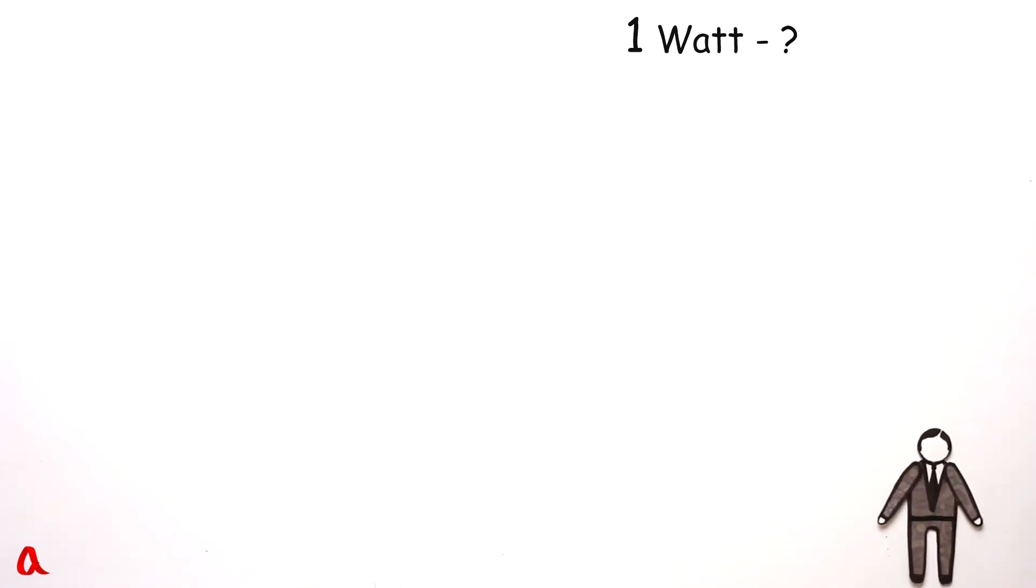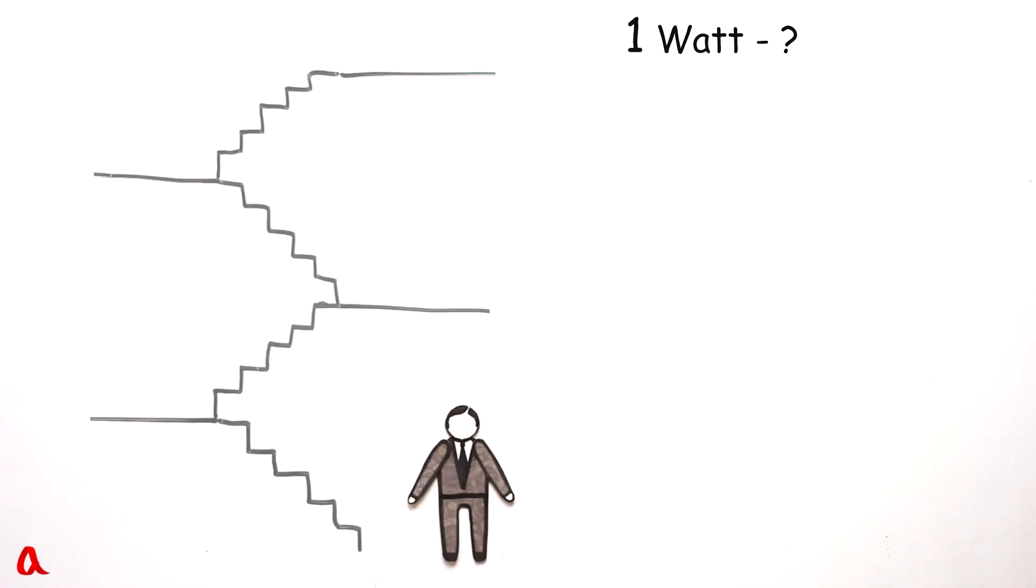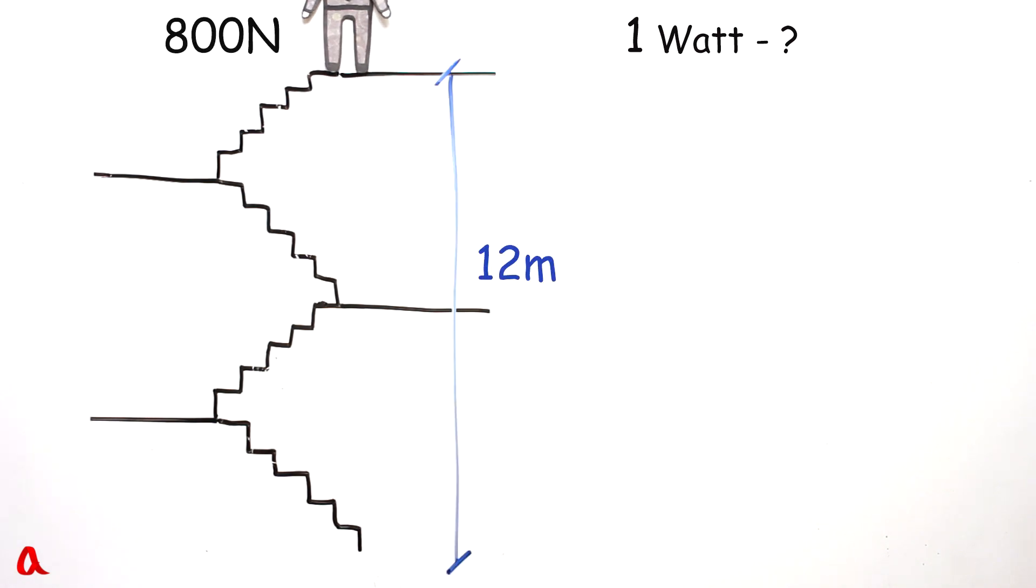To answer this question, let us find the power developed by a person ascending a staircase. A man whose weight is 80 kilos is climbing the stairs to the fourth floor. His weight equals 800 newtons and the height to which he is ascending is 12 meters.